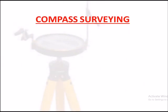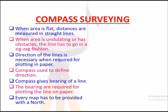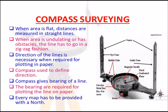Compass surveying. Various types of compass surveying: prismatic compass and surveyor compass. The prismatic compass measures a bearing in the north direction, while the surveyor compass measures a bearing in both north and south directions. This picture shows the surveyor compass.